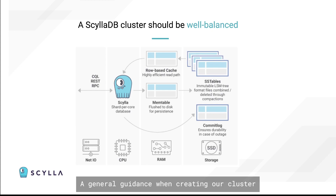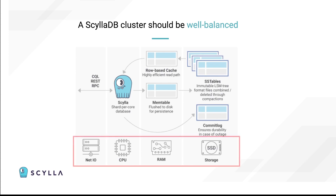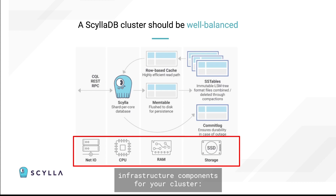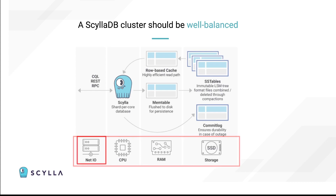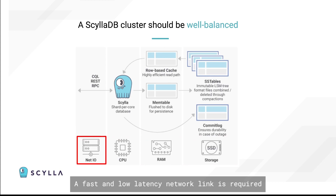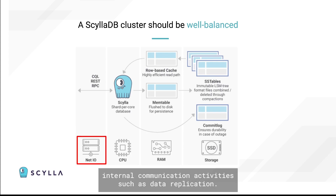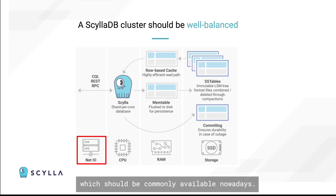A general guidance when creating your cluster is to ensure a well-balanced configuration. Let's take a look at each of the main infrastructure components for your cluster: networking, CPUs, RAM, and storage. A fast and low latency network link is required both from an application's perspective, as well as for cluster internal communication activities, such as data replication. We recommend a network of 10 Gigabits or more, which should be commonly available nowadays.